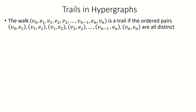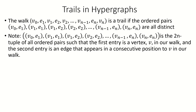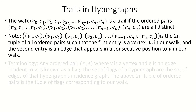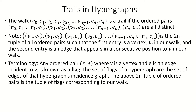The walk v_0 e_1 v_1 ... v_n, where the v_i's and e_i's are not necessarily distinct, is said to be a trail if the ordered pairs v_0 e_1, v_1 e_1, v_1 e_2, v_2 e_2, and so on are all distinct. These ordered pairs form a 2n-tuple where the first entry is a vertex in our walk and the second entry is an edge that appears immediately before or after that vertex. Note that any ordered pair (v, e) where v is a vertex, e is an edge, and v is incident to e, is referred to as a flag, and the flags in a hypergraph are the same as the edges of its incidence graph. We'll refer to this 2n-tuple of ordered pairs as the tuple of flags associated with our walk.